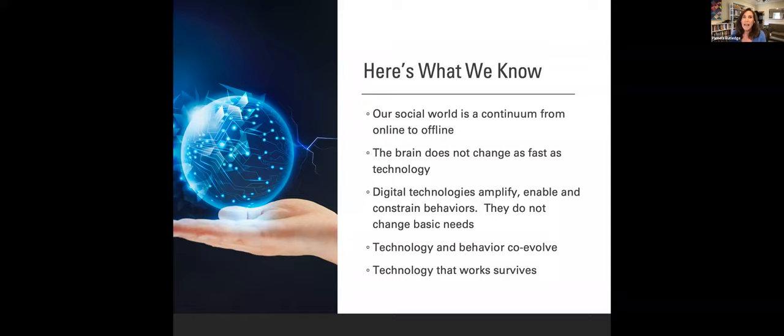Technology and behavior are integrated, right? They co-evolve. What we do impacts the technology. What the technology does impacts us. And, you know, technology that works, that delivers on what people are trying to do will survive. So people are not platform loyal. They are function loyal, which is a really important thing. And it's why Facebook keeps buying things because it watches people have new needs and new goals and new desires. And it has to be there to supply those or there will be no Facebook.